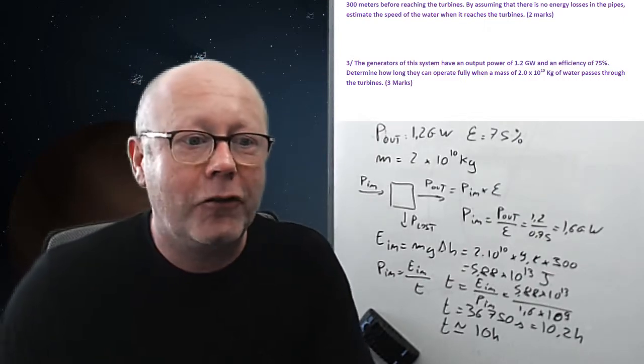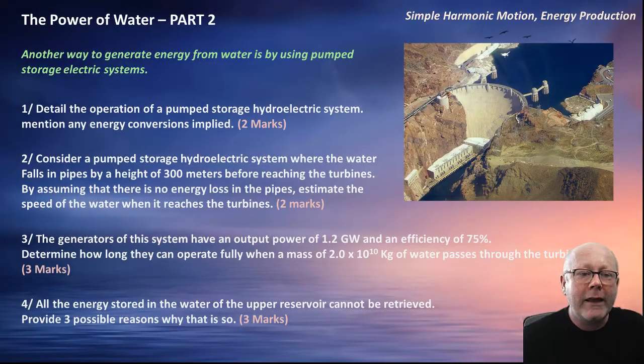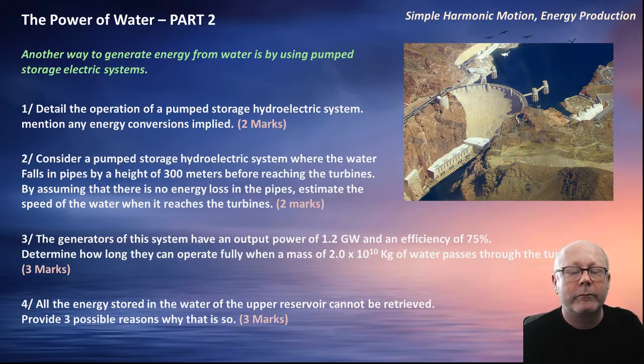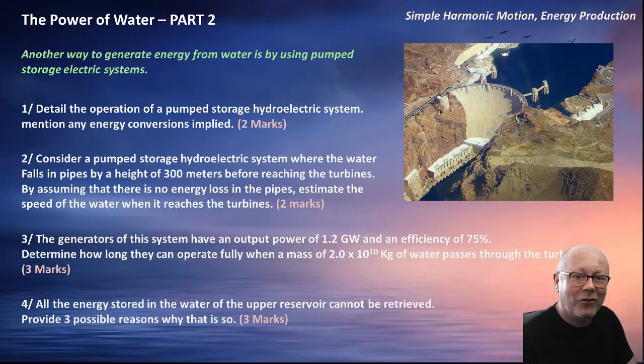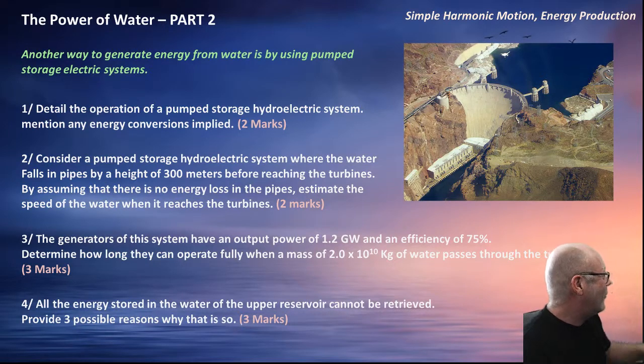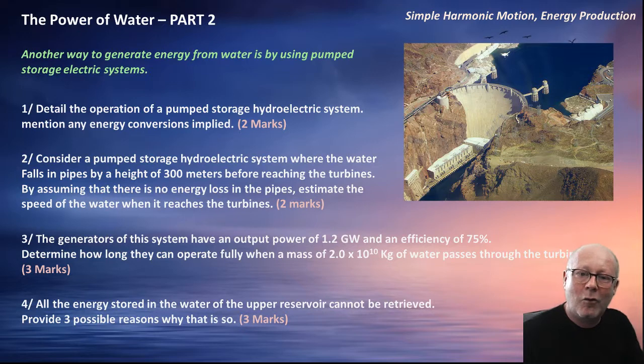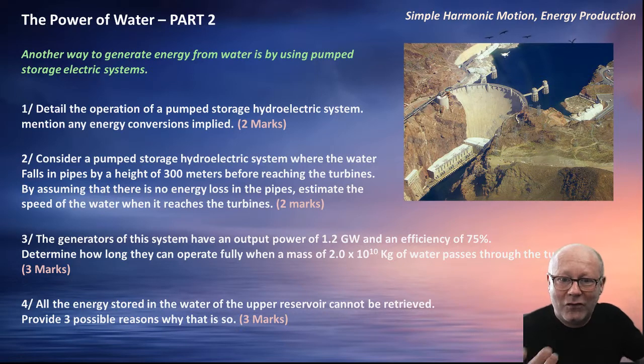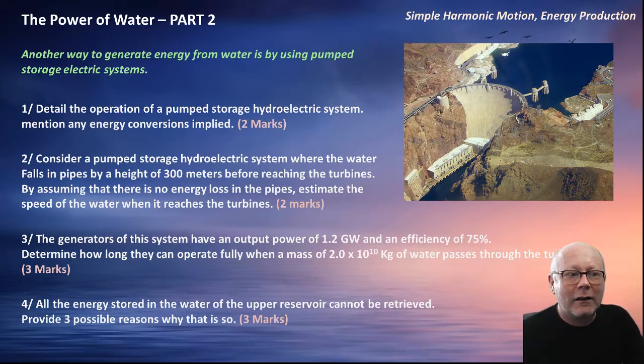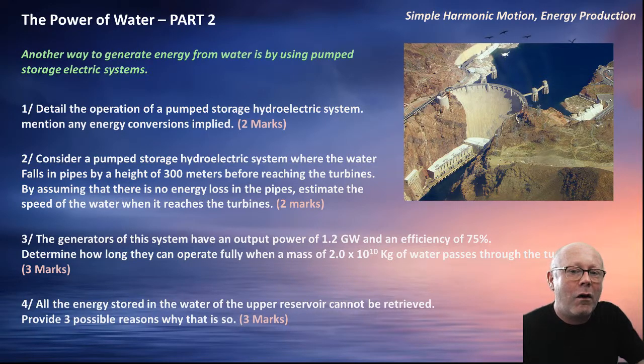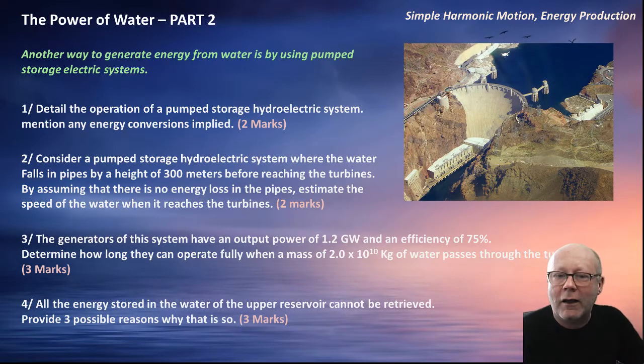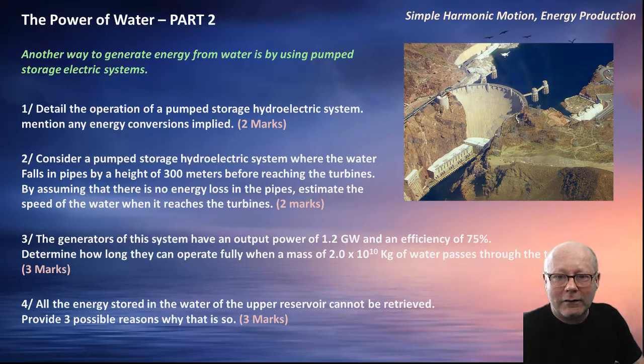First question. All the energy stored in the water of the upper reservoir cannot be retrieved. Provide three possible reasons why that is so. Well, when we did this calculation, we assumed that all the gravitational potential energy of the water would become kinetic energy of the water reaching the turbines, right? But no. There's friction in the tubes. Now, water has a certain viscosity, and there's also friction in the tubes. Therefore, we neglected the work done by friction against the motion of the water. So, not all this gravitational potential energy would be available. So, we have to consider, reason number one, friction in the tubing.